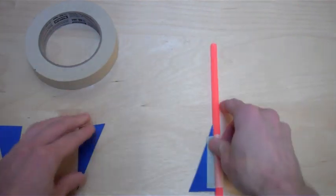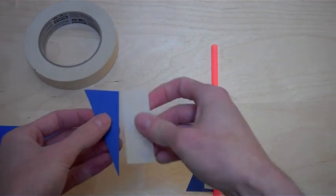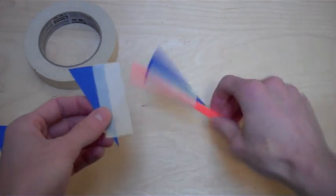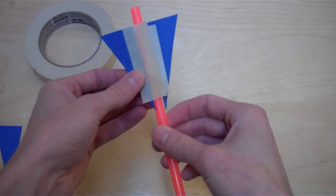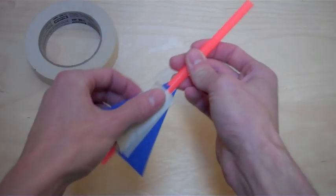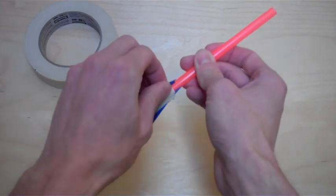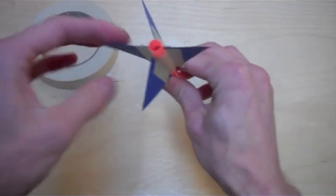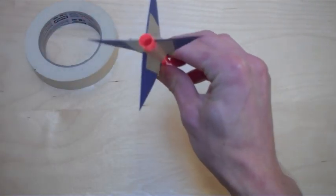Have the students put down their rocket each time they repeat this step. It can be difficult for young students to manipulate the fins, tape, and rocket all at once. When you're finished, check for straightness and symmetry.